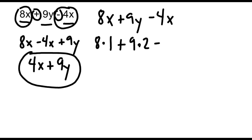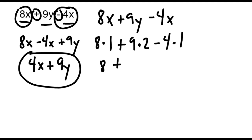For this last x, we have to use the number 1 because we used a 1 for the first x. So instead of 8 times x, we do 8 times 1; instead of 9 times y, we do 9 times 2; and instead of 4 times x, we do 4 times 1. Evaluating: 8 times 1 is 8, plus 9 times 2 is 18, minus 4 times 1 which is 4. Then 8 plus 18 is 26, and 26 minus 4 is equal to 22.